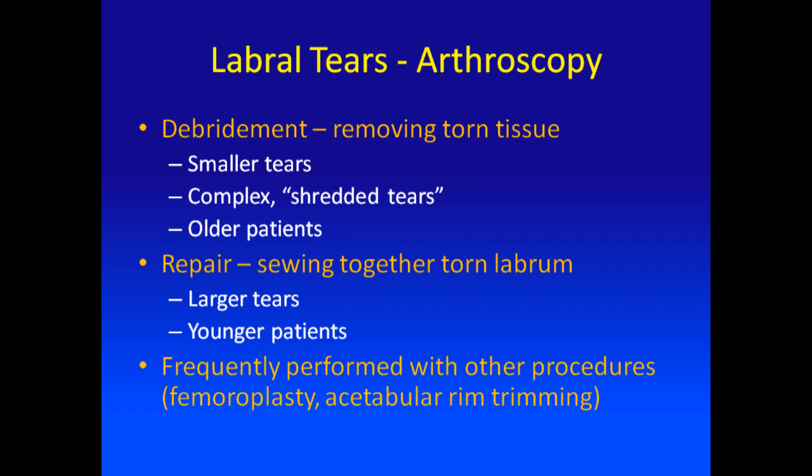There are two ways to treat the torn labrum. One is with debridement, which is essentially removing the torn tissue, and this is used for smaller tears or more complex shredded tears in which we are unable to get a good suture around the labrum — typically in older patients. We can also repair the labrum when it is a more solid piece that we are able to suture together, which is more frequent in younger patients. Most of these procedures are performed in conjunction with other surgeries, such as femoroplasty or acetabular rim trimming, to remove the bone spurs that cause the tears in the first place.